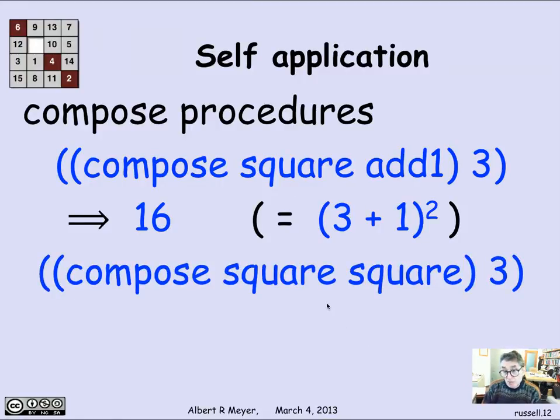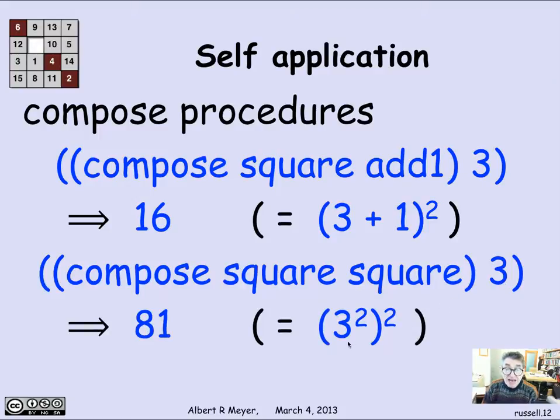Now, I can do the following. I could compose square with itself. If I take the function square it and square that, I'm really taking the fourth power. So if I apply the function compose of square squared to 3, I get 3 squared squared, or 81, or 3 to the fourth. Well, it makes perfect sense.